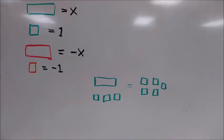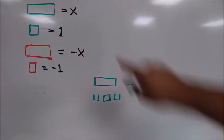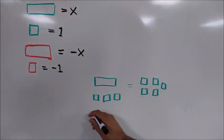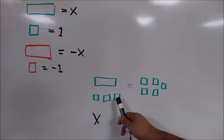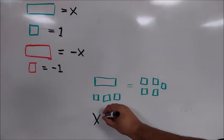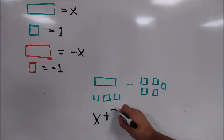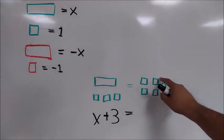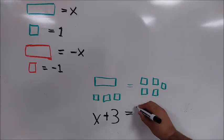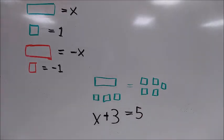So if we see one green bar and three yellow boxes on one side of this equation, that tells us that we have one single X. And in addition to that single X, we have 1, 2, 3 constants. So this would represent X plus 3. On the other side of the equal sign, we have 1, 2, 3, 4, 5 constants. So this represents the equation X plus 3 equals 5.